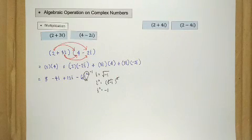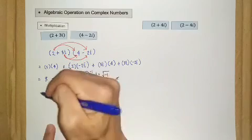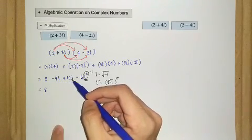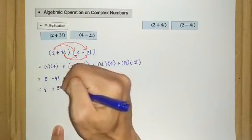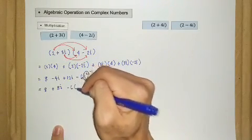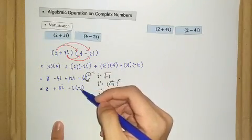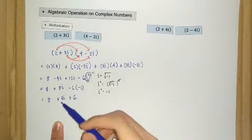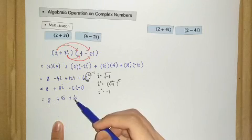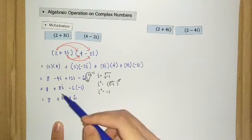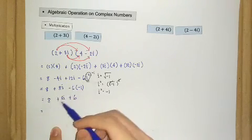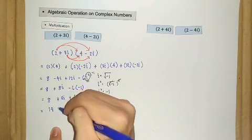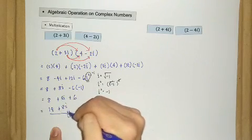So this expression becomes 8, then for the imaginary parts we have negative 4i plus 12i which gives plus 8i. And negative 6 times negative 1 gives plus 6. So we have 8 plus 8i plus 6. Combining the real parts, 8 plus 6 equals 14, giving us a final answer of 14 plus 8i.